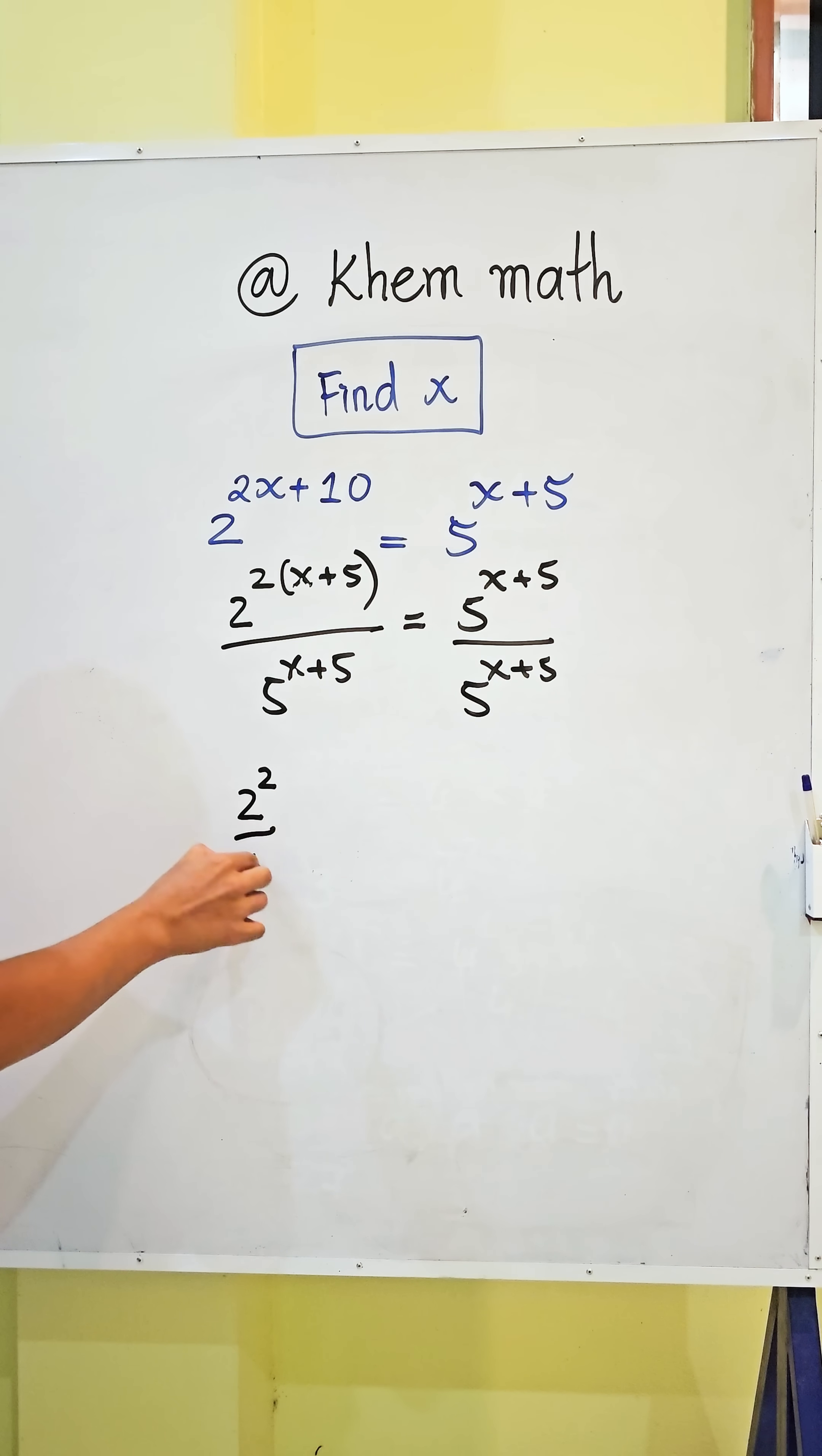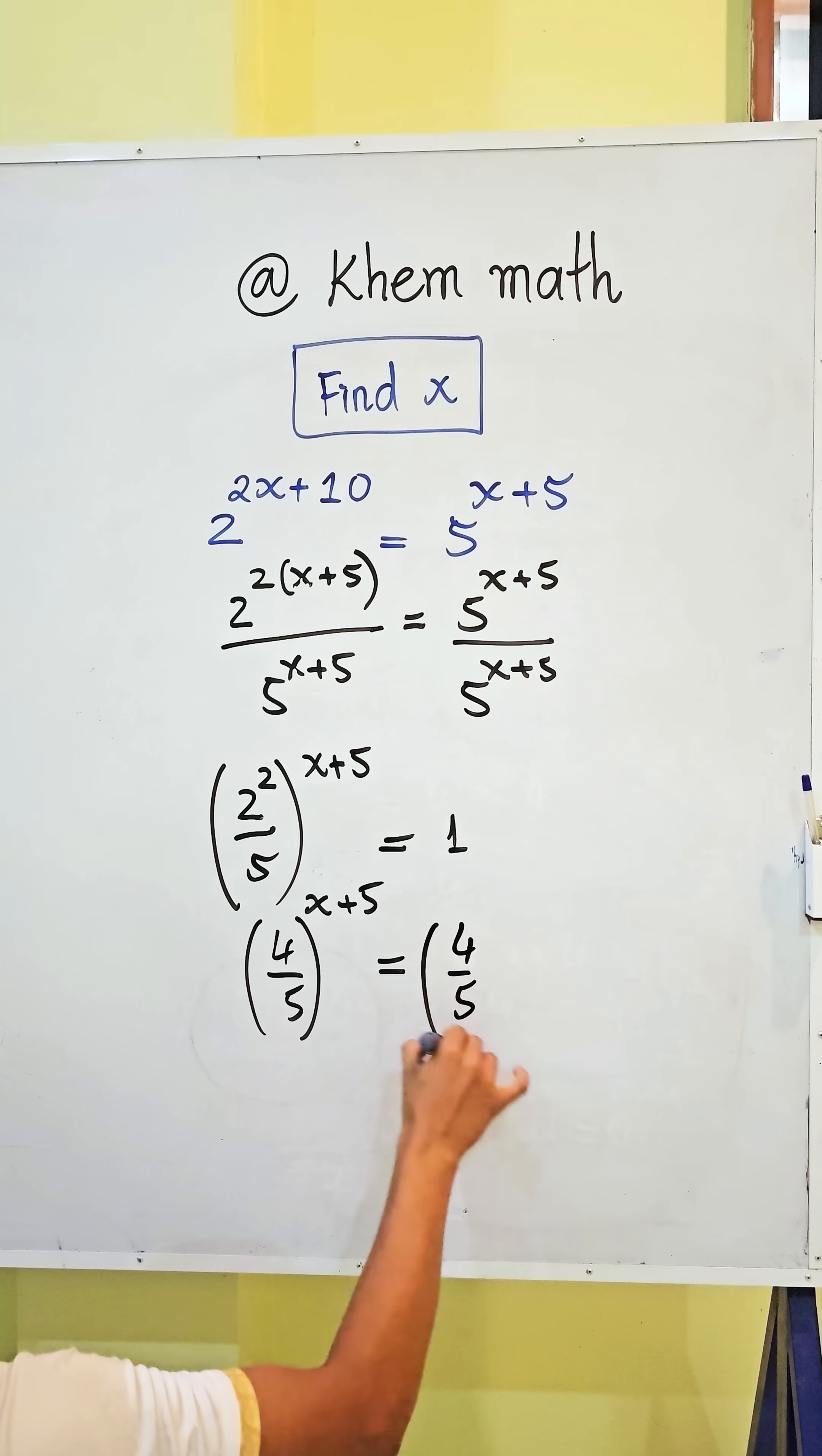This equals 1. Now, 2 squared equals 4, so we get 4 divided by 5 to the power x plus 5. Here we can rewrite this as 4 divided by 5 to the power 0.